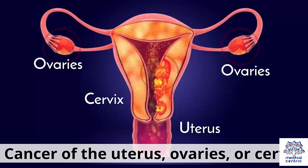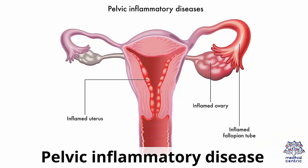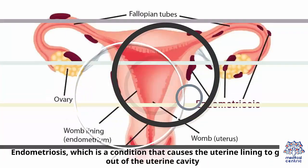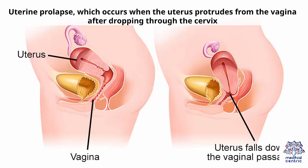Additional indications include cancer of the uterus, ovaries, or cervix; adenomyosis, which causes the uterine lining to push into the uterine muscle; pelvic inflammatory disease; endometriosis, a condition that causes the uterine lining to grow out of the uterine cavity; and uterine prolapse, which occurs when the uterus protrudes from the vagina after dropping through the cervix.